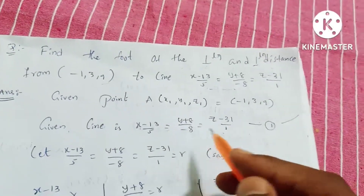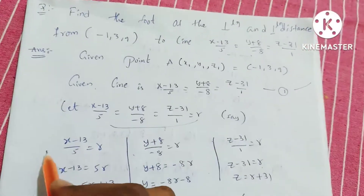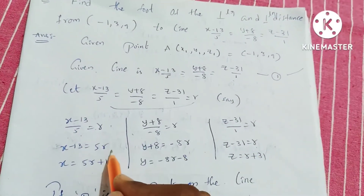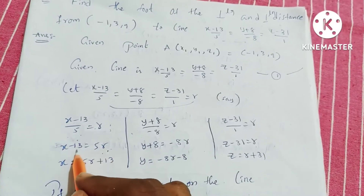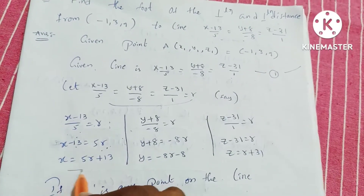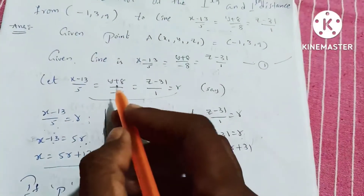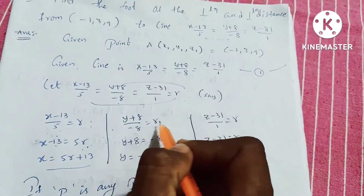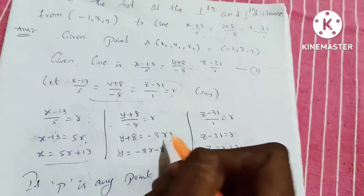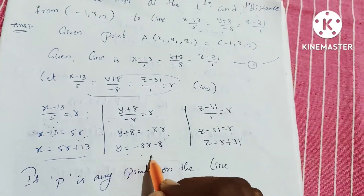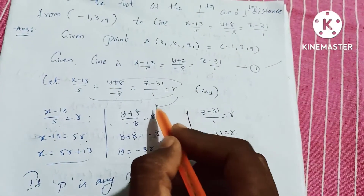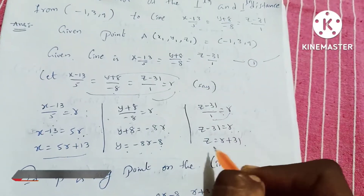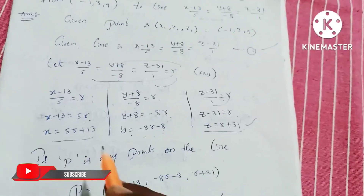Setting up the parametric form: let R be the parameter. From (x minus 13) by 5 equals R, we get x equals 5R plus 13. From (y plus 8) by minus 8 equals R, we get y equals minus 8R minus 8. From (z minus 31) by 1 equals R, we get z equals R plus 31. So x, y, z are expressed in terms of R.